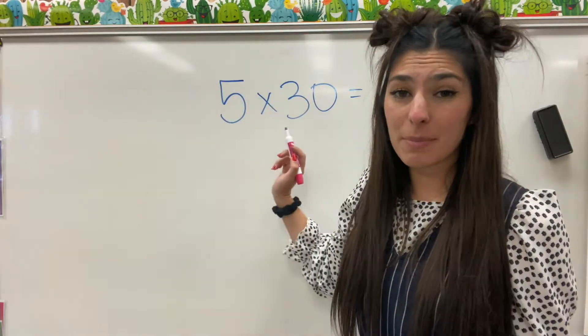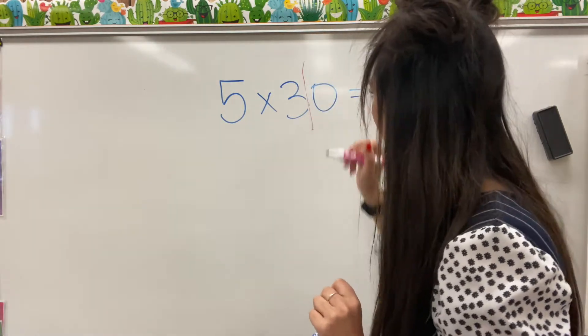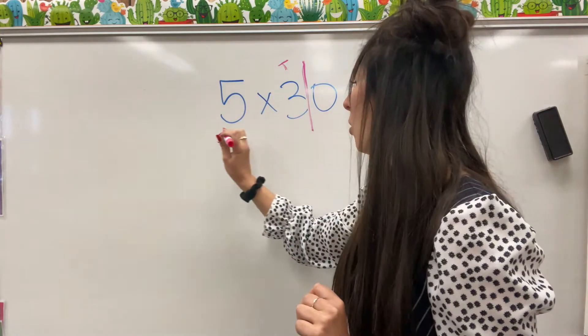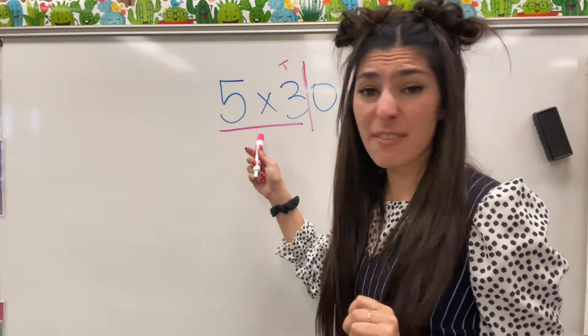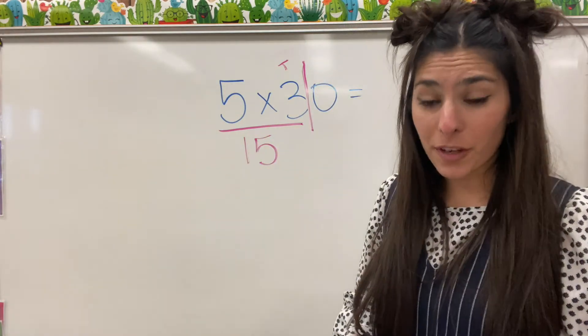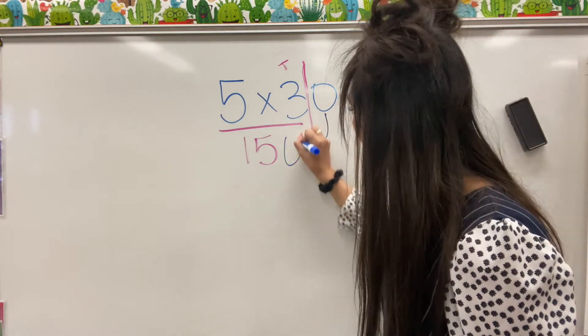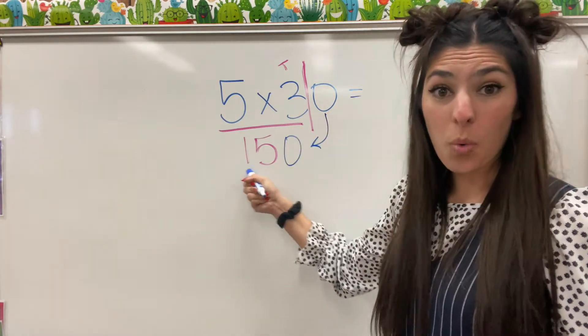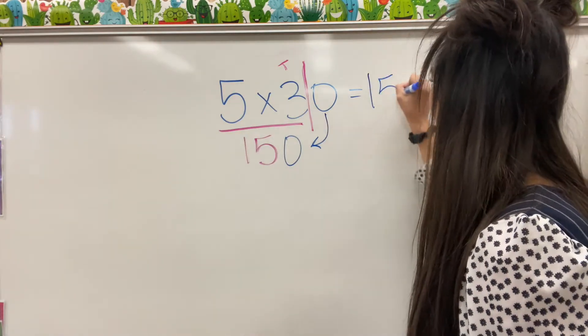Let's do another one. 5 times 30. First thing we're going to do is we're going to chop that 30 in half. Now once we've chopped that in half, we are only going to multiply this 5 times 3. So what is 5 times 3? 15. And then don't forget that 0 that we chopped off and saved for later. So we're going to bring that 0 here. So our real answer is 150. So 5 times 30 equals 150.